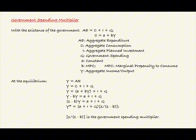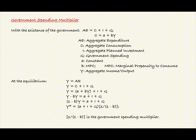If we factor out the term 1 minus B from the left-hand side of the equation, we have the quantity 1 minus B times Y equals A plus I plus G. If we divide both sides by the quantity 1 minus B, we find that Y-star, or the equilibrium aggregate income or output, equals the quantity A plus I plus G times the quantity 1 over the quantity 1 minus B.